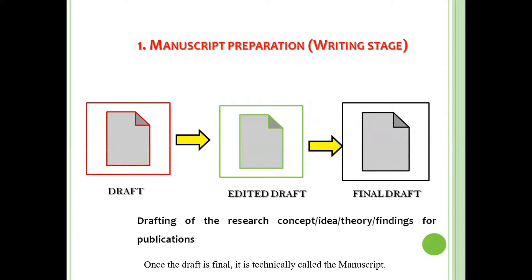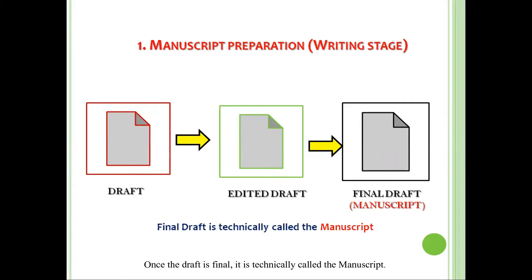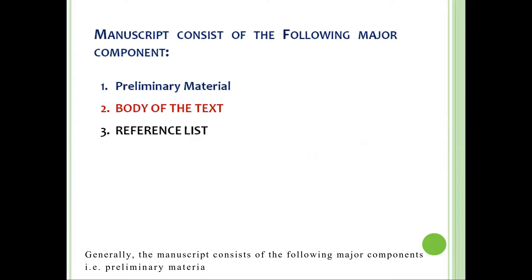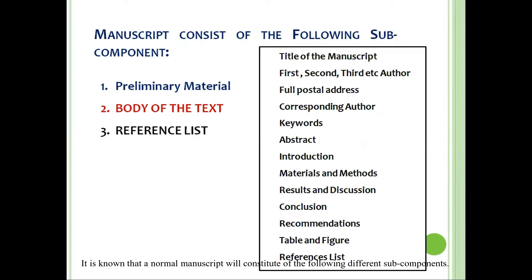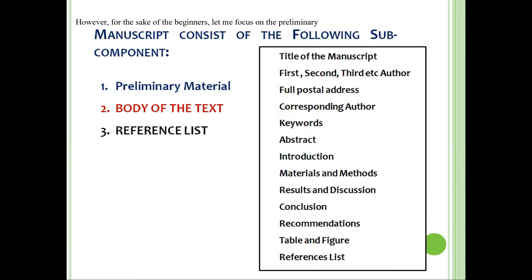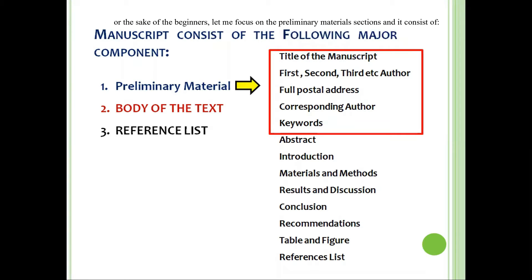Once the draft is final, it is technically called the manuscript. Generally, the manuscript consists of the following major components: the preliminary material, the body of the text, and the reference list. The normal manuscript will consist of various sub-components; however, for the sake of beginners, let me focus on the preliminary material section.